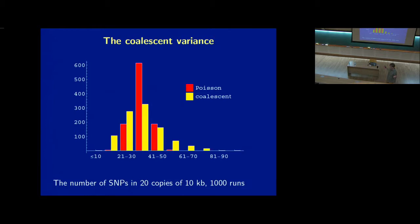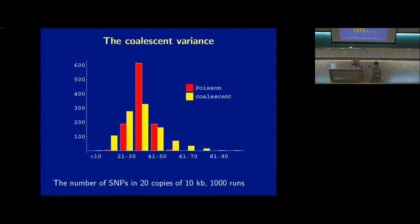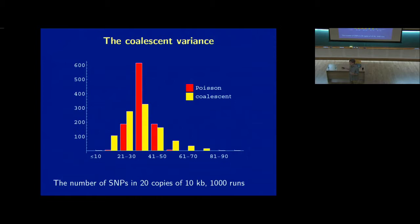When people first started analyzing sequence polymorphism data, they really didn't know what to do with it. Anyone trained in theoretical population genetics in the roughly ten years after I got a PhD pretty much couldn't fail to get a job, because suddenly there was all this data from human genetics and so much money, and people who had absolutely no idea what to do with the data. Anyone who actually understood what linkage disequilibrium was was pretty much guaranteed a faculty position somewhere.